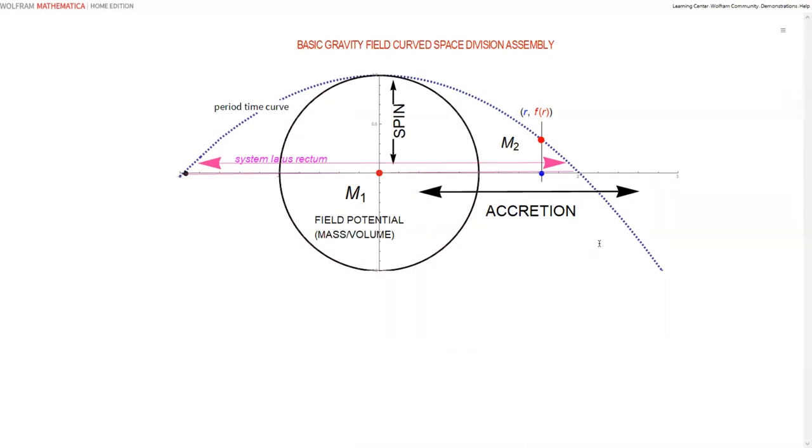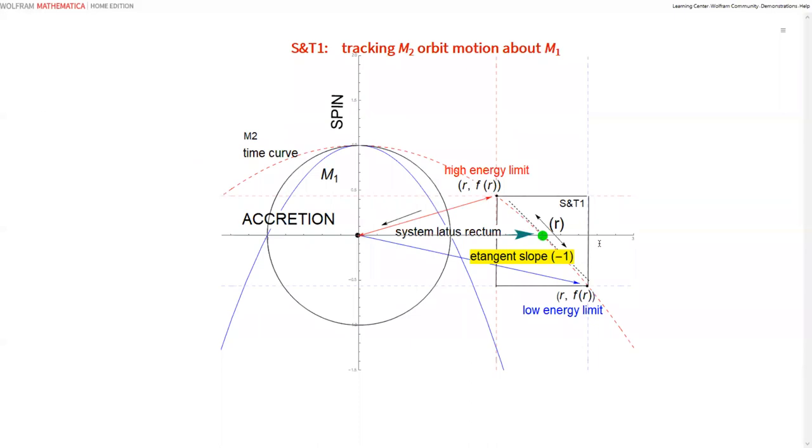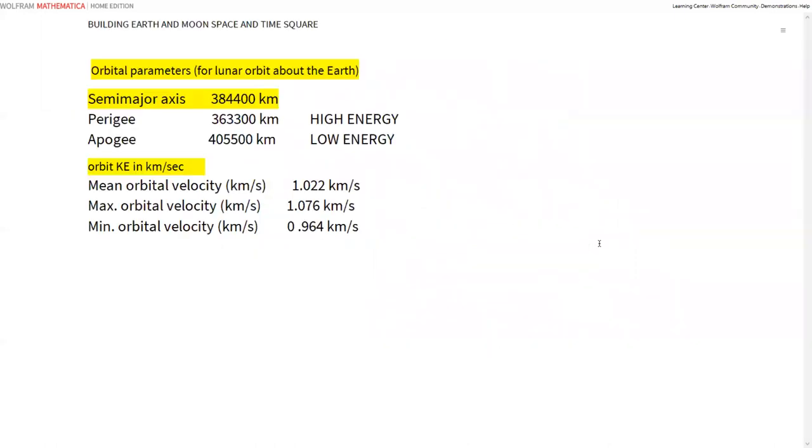Sir Isaac's displacement radius and tracking displacement energy on the dependent period time curve. I use S and T1, stands for space and time square 1, to analyze and construct massive G field space curve. I use bookend position vectors to define energy limits of an orbit period. I use energy tangent slope to determine orbit velocity. The curve time diagonal has a complete history of orbit curvature. Let's build a space time square for the Earth and Moon.